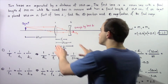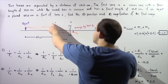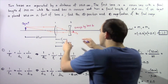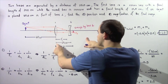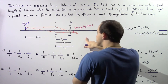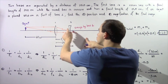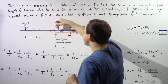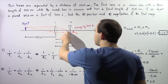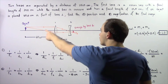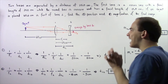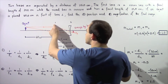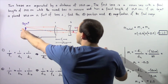Let's begin by looking at our diagram. We have lens number one, our convex lens, and lens number two, our concave lens. The distance between lens one and lens two is 25 centimeters. F1 shows our focal length of lens one, so that distance is 20 centimeters. These are the two focal points of lens one. We place an object 60 centimeters to the left of lens one, shown by the purple arrow.